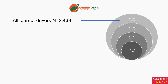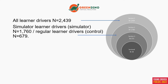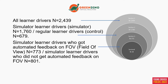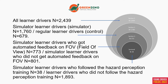Here we see the whole group, with a partition between simulator learner drivers and regular learner drivers — the control group. We then looked at simulator learner drivers who received automated feedback on field of view training, and those who did not get this automated feedback. We also looked at differences between simulator drivers who followed hazard perception training and those who did not follow hazard perception training.